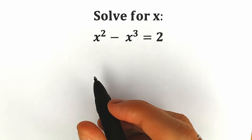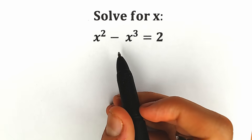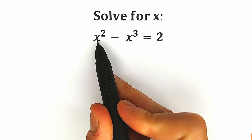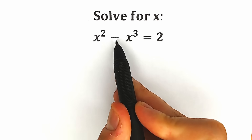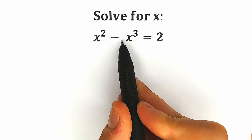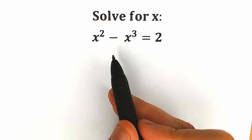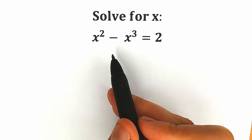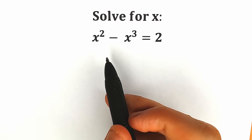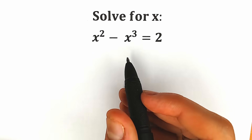Hello everyone, happy to see you here. Welcome back to my channel. Today we're going to solve a really interesting cubic equation. We have x squared minus x cubed equal to 2, and we need to find x. If you have your solution, your approach, you can write it down into the comment section, and then we will check our answers.